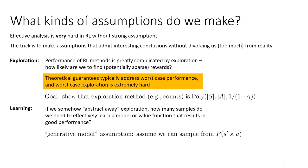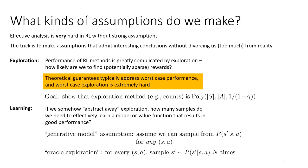With oracle exploration, for every state-action tuple we sample p(s'|s,a) n times—literally carpet-bombing the whole MDP. The problem is still not solved; we still need to study the effect of sampling error. So one way to do this is to basically assume oracle exploration for every state-action tuple, and then study what remains.